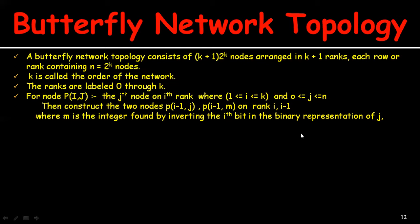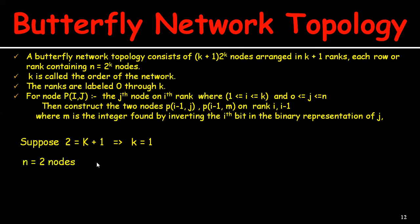Suppose the number of labels is 2, equal to k+1, which implies k = 1. And from here, n = 2^k, so since k = 1, n = 2^1 = 2 nodes. For this particular example, the number of labels is 2.